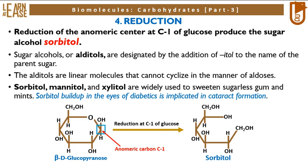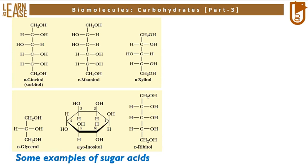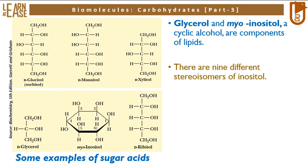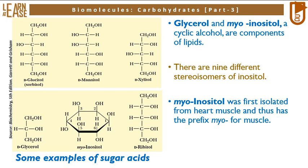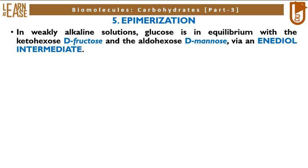Examples of sugar alcohols shown include glucitol, mannitol, xylitol, glycerol, myo-inositol, and ribitol. Glycerol and myo-inositol, a cyclic alcohol, are components of lipids. There are nine different stereoisomers of inositol. Myo-inositol was first isolated from heart muscle and thus has the prefix 'myo' for muscle. Ribitol is a constituent of flavin coenzymes.